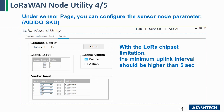The last page is the sensor page. Under the sensor page, you can configure the input and output of your sensor. There is a limitation about our LoRaWAN chipset — the minimum uplink interval should be higher than 5 seconds.